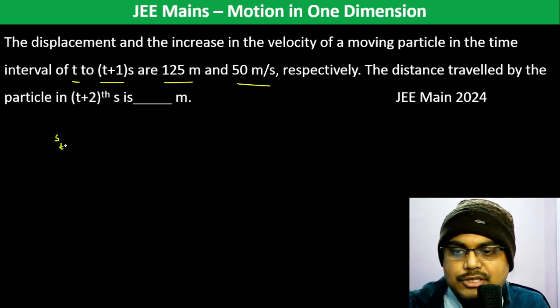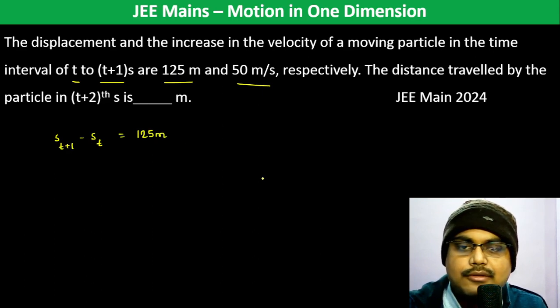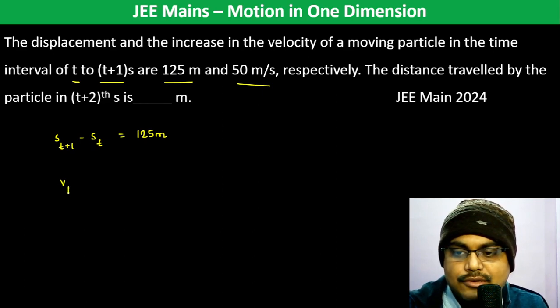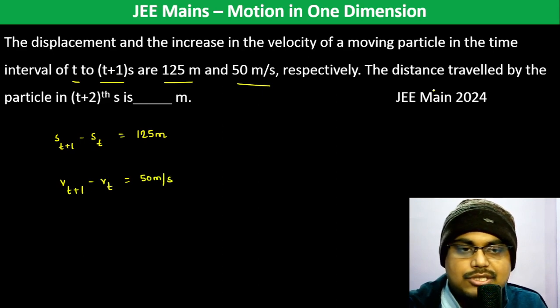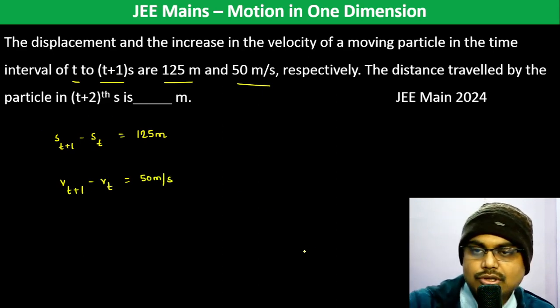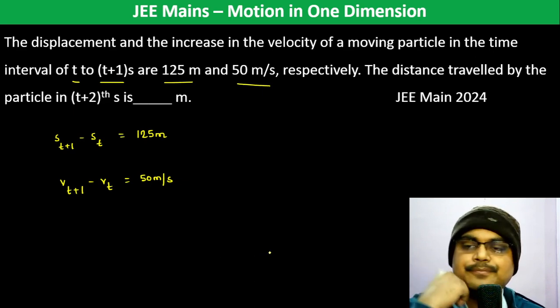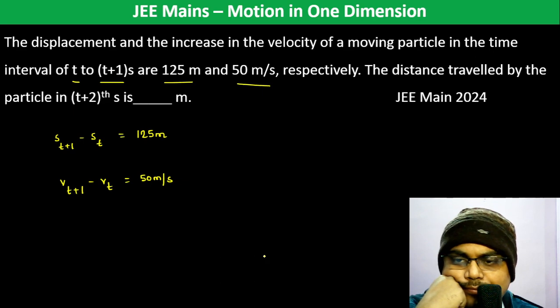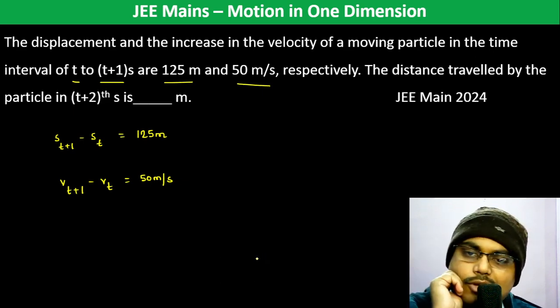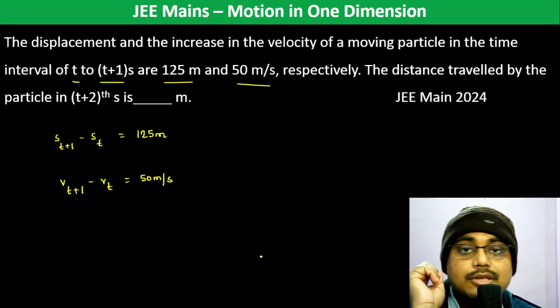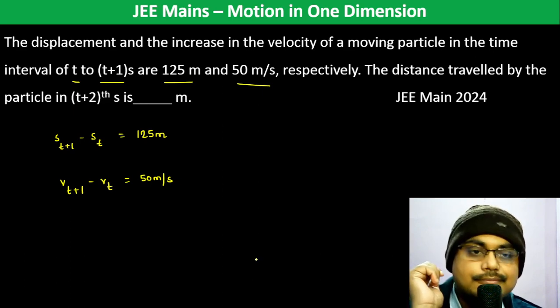So displacement S_{t+1} - S_t = 125 meters, and velocity increase V_{t+1} - V_t = 50 m/s. The distance traveled by the particle at T+2 seconds is what we need to find. We'll assume the velocity increase means acceleration is uniform and constant.